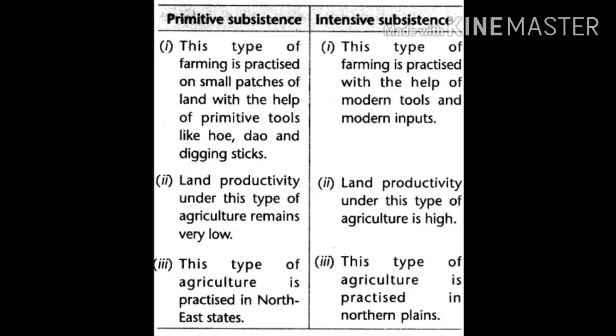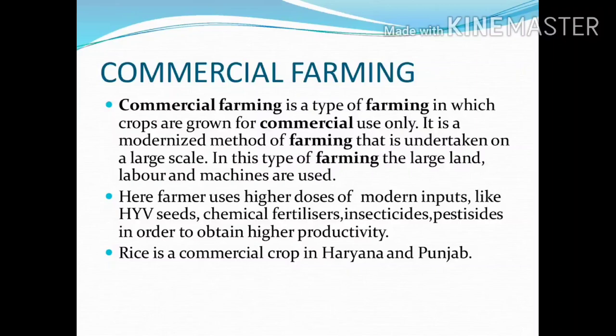Let us see commercial farming. Commercial farming is a type of farming in which the crops are grown for commercial use only, that is for selling purpose. It is a modernized method of farming undertaken on a large scale. In this type of farming, large land, labor, and machines are used. The farmer uses higher doses of modern inputs like HYV seeds, chemical fertilizers, insecticides, and pesticides in order to obtain higher productivity.